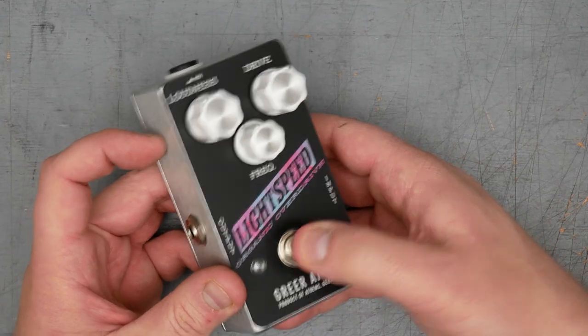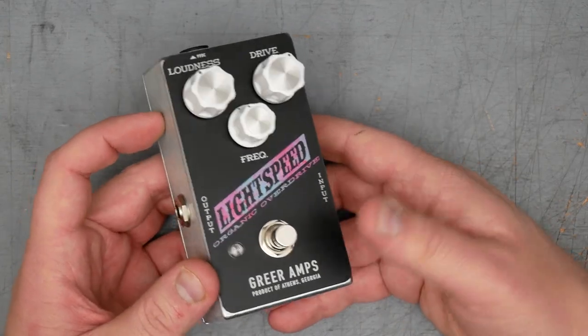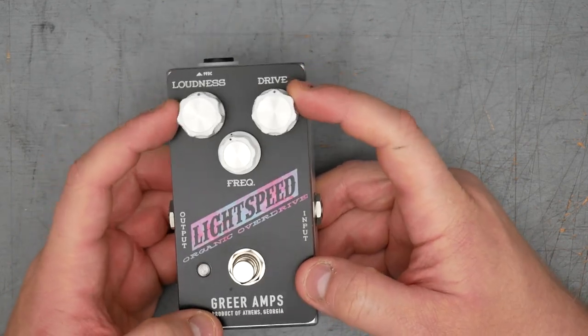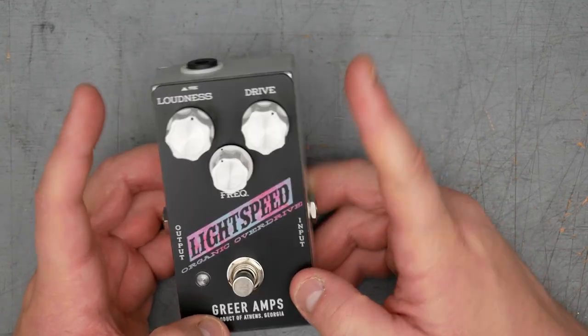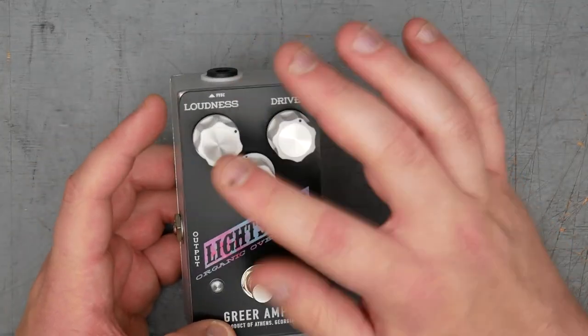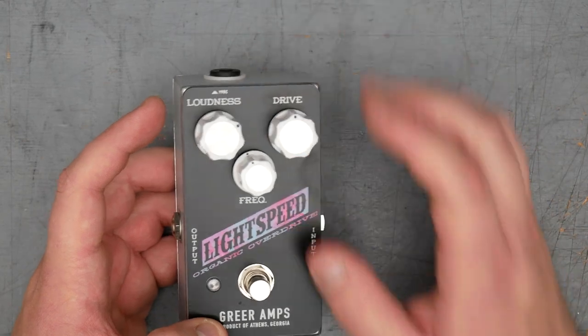Footswitch is a latching type. Feels like just a standard blue three-pole double-throw footswitch. The knobs, I recognize these knobs from the Small Sound Big Sound Mini. That's where I have seen these knobs before, but they work well. They look nice and have good molding and grips so you can easily make adjustments.